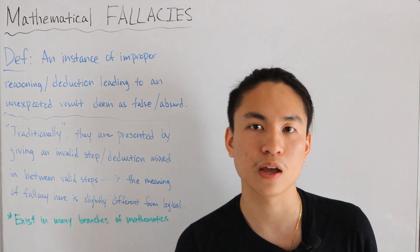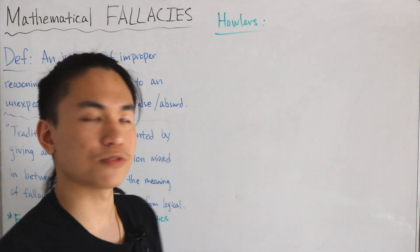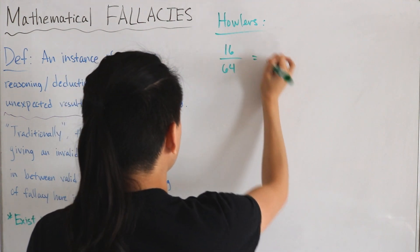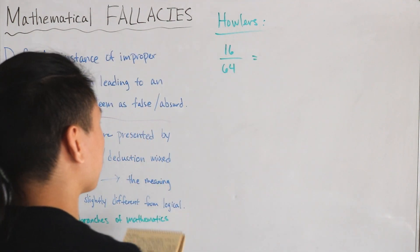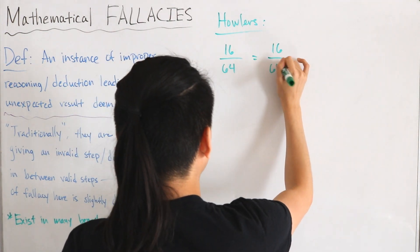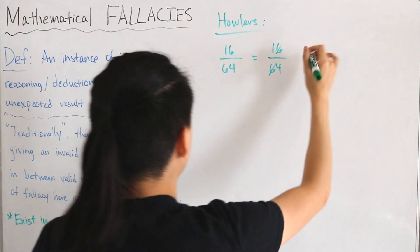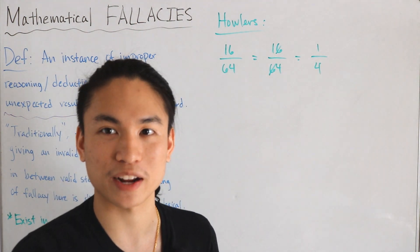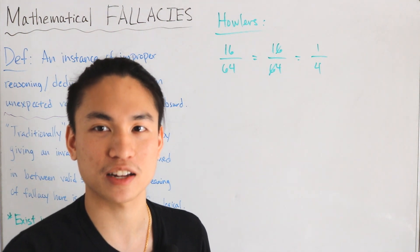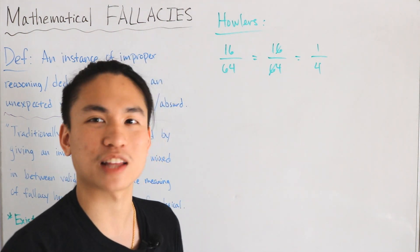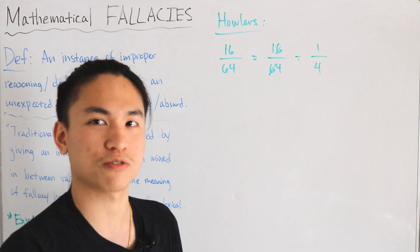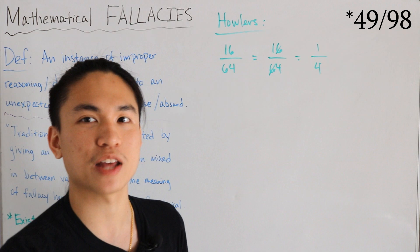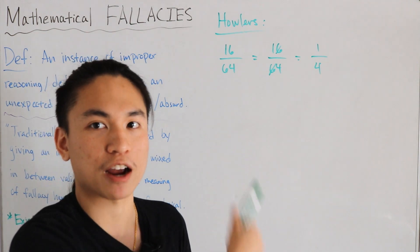Here's an example of a howler fallacy. Suppose we have the fraction 16/64. One incorrect line of reasoning says we can just cancel the digit 6 on both the top and bottom, giving 1/4 — and indeed that is mathematically correct. But that's not how you're actually supposed to simplify the fraction. If you think you can do this for all fractions, another case quickly shows that doesn't hold.